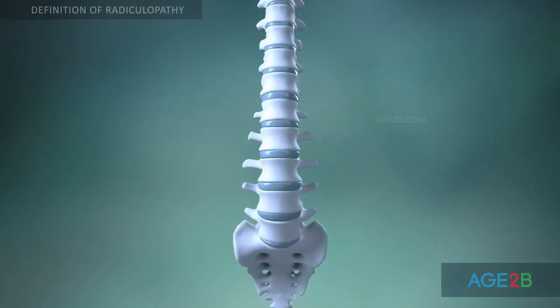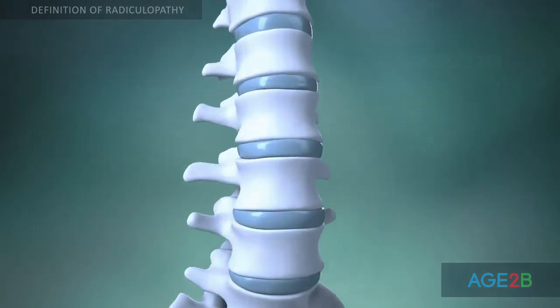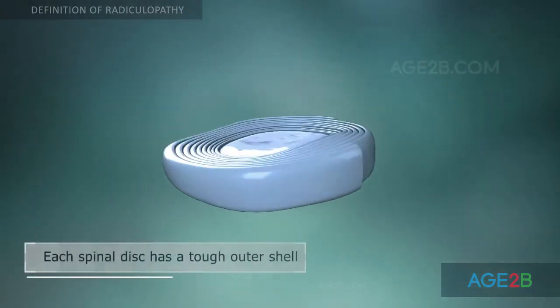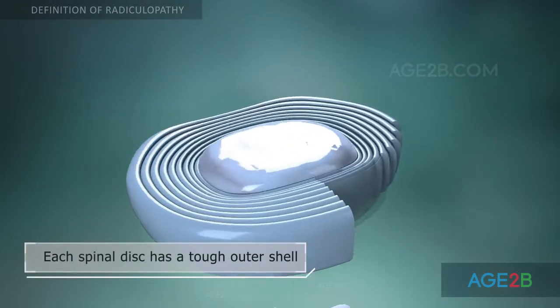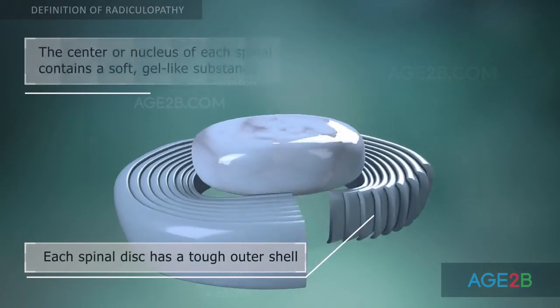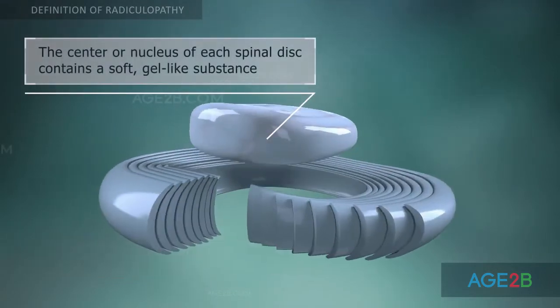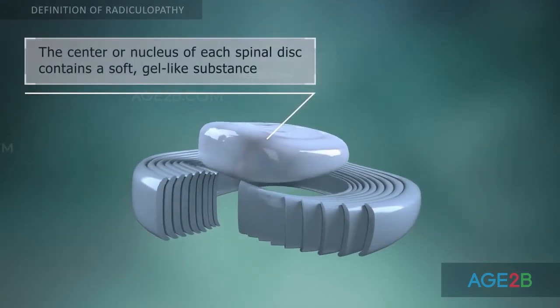Each spinal disc has a tough outer shell called the annulus. The center portion of the disc, the nucleus, contains a gel-like substance.